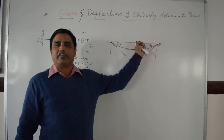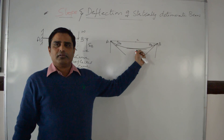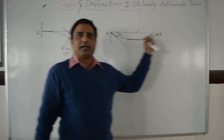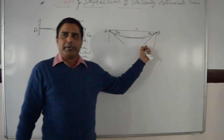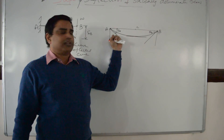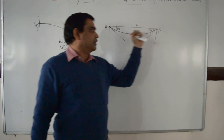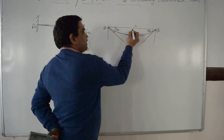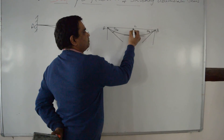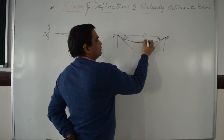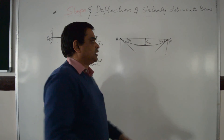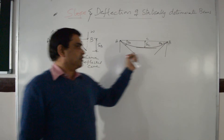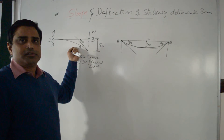For a simply supported beam, the slope is maximum at the left support and at the right support. There is no deflection at the left support and no deflection at the right support. Deflection is maximum at the center. This is the deflection of a simply supported beam, and this is the deflection of a cantilever beam.